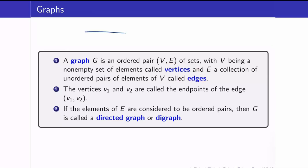If we have an edge, let's call this V1 and V2, we say that these are the endpoints of the edge V1, V2. If the elements of E are considered to be ordered pairs, then G is called a directed graph or a digraph.